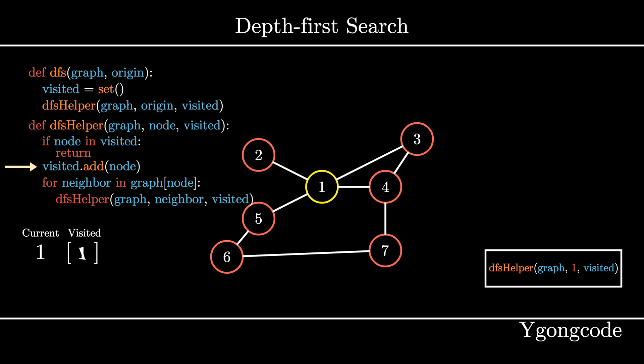Next, we look at our graph, which is represented by an adjacency list, to see if it has any neighbors. We can see that one has four neighbors: two, three, four and five. So we iterate through the neighbors and pick one randomly, which happens to be node 5.